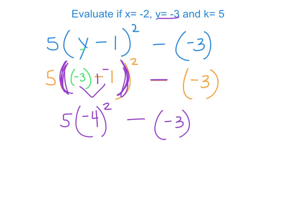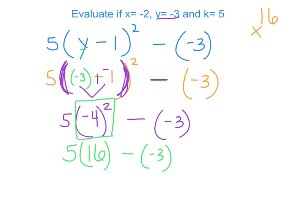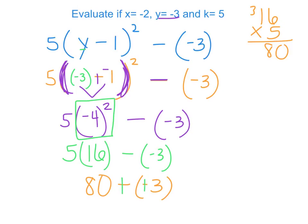Next come exponents: negative 4 squared is negative 4 times negative 4, which is positive 16. So I have 16 times 5, which is 80. Then 80 minus negative 3 — add the opposite — gives 80 plus 3, which equals 83.